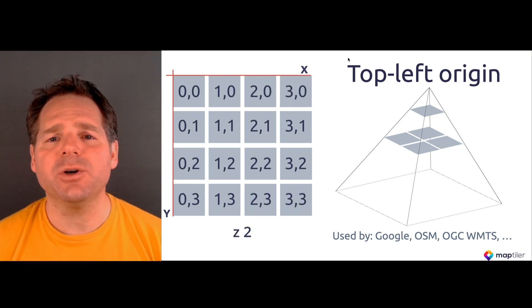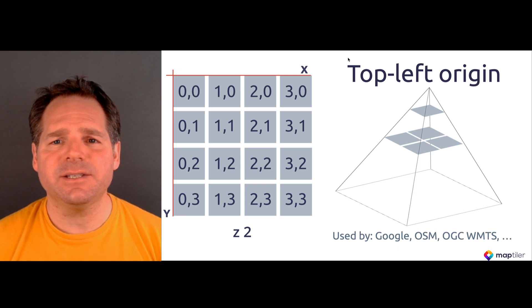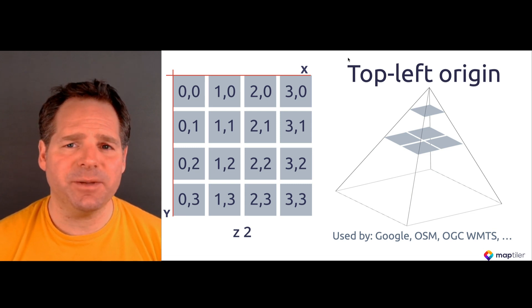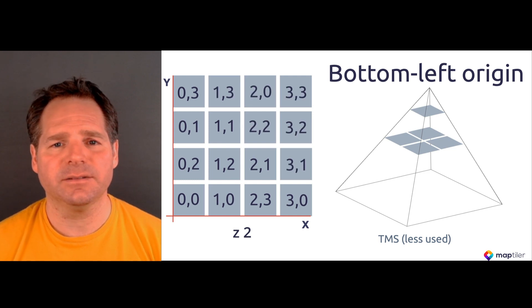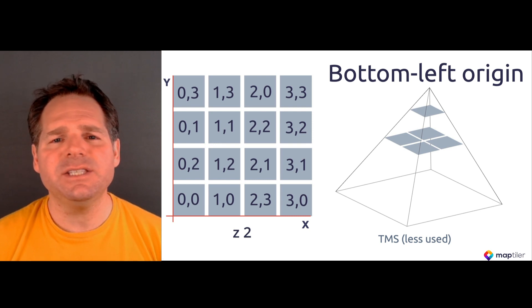Usually X and Y are counted from the top left corner. This system is used by MapTiler, OpenStreetMap, and is the OGC web map tile service standard. However in some cases X and Y can be counted from the bottom left corner. This is used for example by the Tile Map Service, or TMS. To get the tile size from pixels, we just need to use the floor division of pixels by tile size.